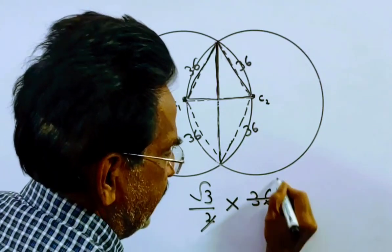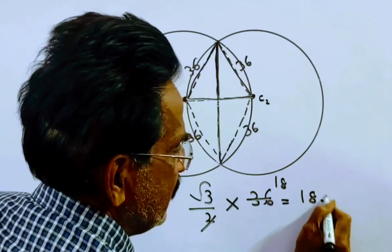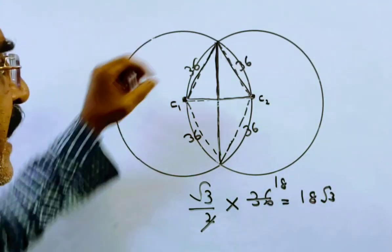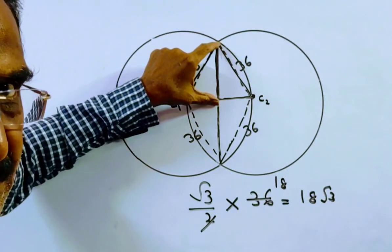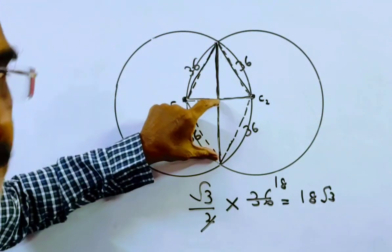So this simplifies to 18 root 3, which is the height of the equilateral triangle. This is 18 root 3, and this is also 18 root 3.